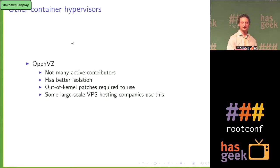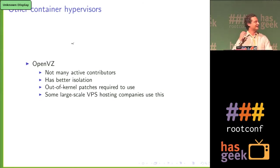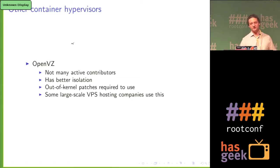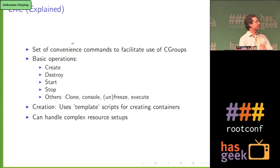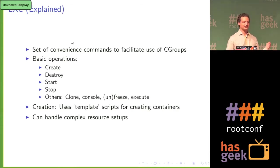The other container option is OpenVZ. This used to be the leading container option — a lot of cheaper web hosts and shell hosts still use it. It was never really part of the Linux kernel; it was always an out-of-kernel patch set. It was popular because it existed long before cgroups and had better isolation. These companies still use it and are very happy with it, but there aren't many contributors and no one's really working on it anymore. LXC is a set of convenience scripts on top of cgroups that allows you to do things like create, stop, start, and destroy — it's not really adding features, but it's making cgroups a lot easier to use.